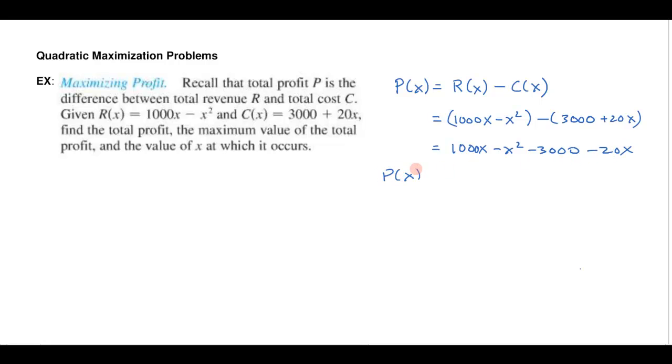So it looks like my profit is given by this formula. I'm going to write it as P(x) = -x² + 980x - 3000. So write it in descending powers. And then I notice that this is a quadratic equation.